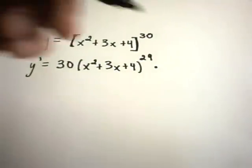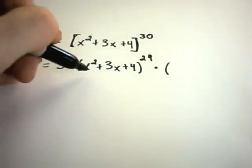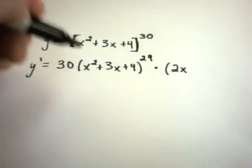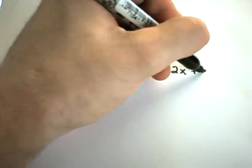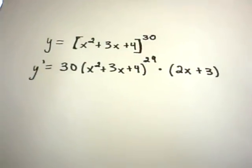And then again I'll multiply this by the derivative of the inside stuff. The derivative of x squared is 2x. The derivative of 3x is just 3. And there's your derivative.